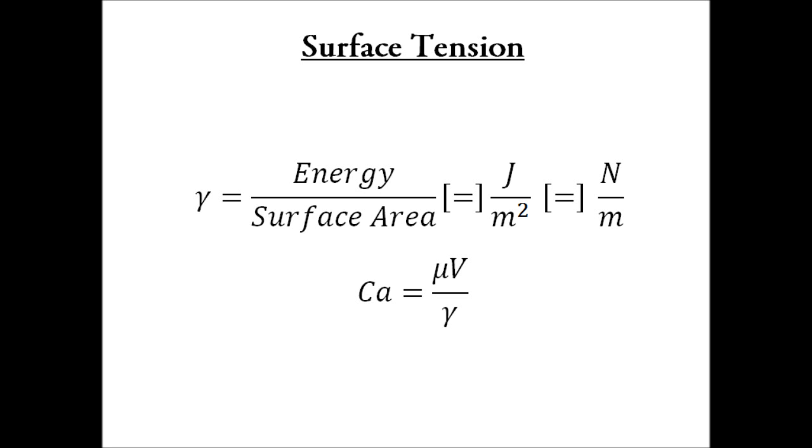One particular example where the capillary number becomes important is the case of an oil drop in water. And for this case we define the capillary number with a slight difference. Where instead of velocity, you can see here we have a times gamma, and in this case a is the drop radius, and this gamma dot is the shear rate, or how strong the flow is.